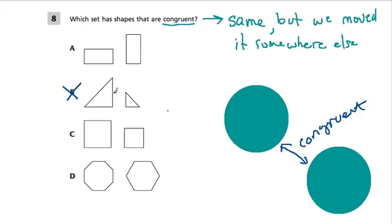For example, we can cross out B. Yeah, they're both triangles, but this triangle is too small. It's smaller than this one right here, so they're not congruent.